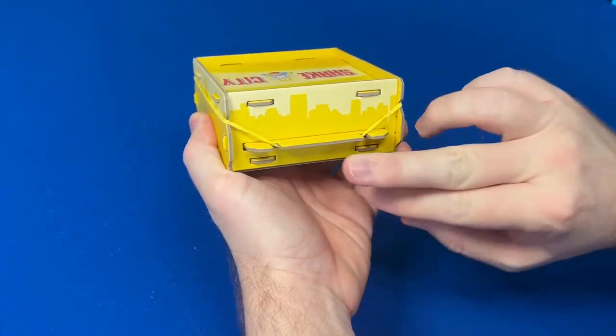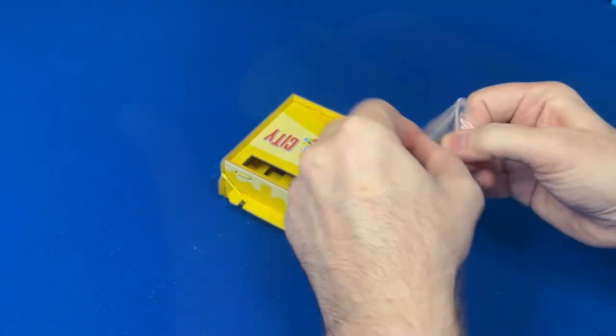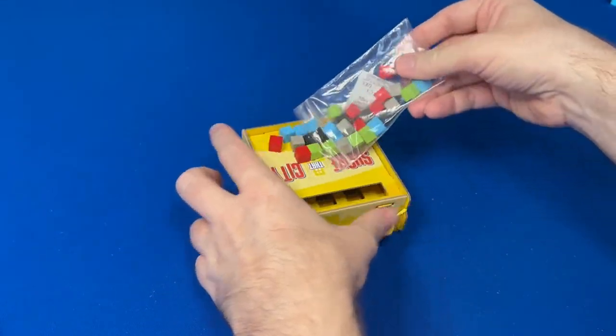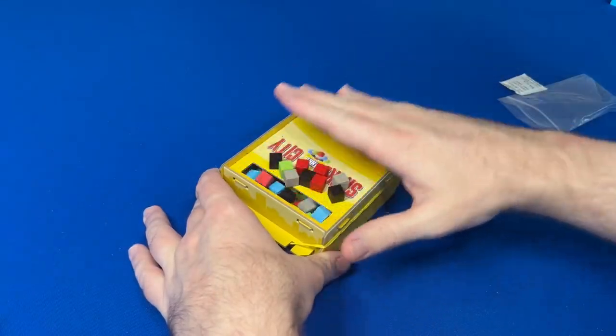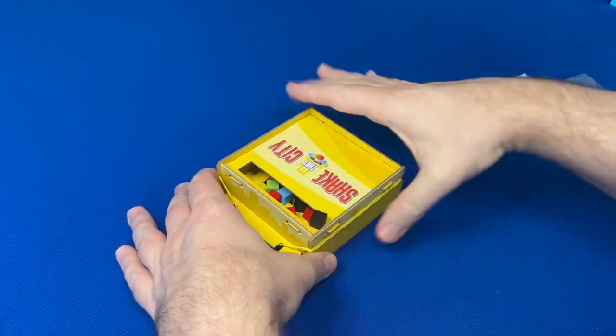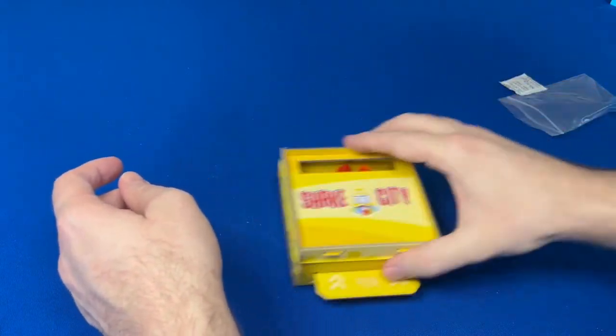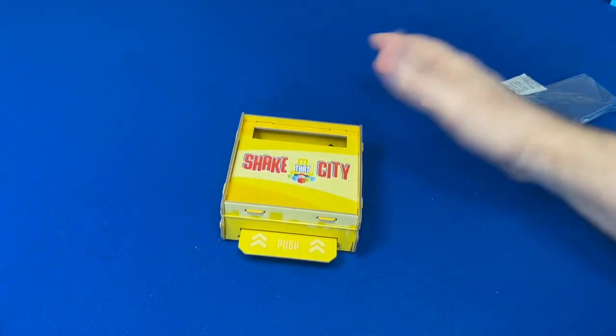Now we're ready to add some cubes and start shaking. Open your bag of cubes and dump them on top of the shaker. Then push them all into the cube window and give it a few shakes. It's better to keep the shaker on the table and shake it from side to side rather than up and down. You might lose some cubes that way.